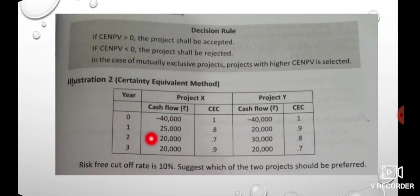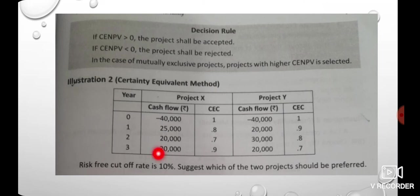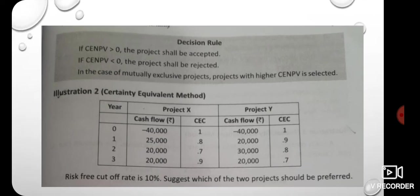In the first year, the cash outflow is negative $44. The cash flows are $44, $52, $49, $46, and $50. The cost of capital is 10%. The question asks which of the two projects should be accepted.